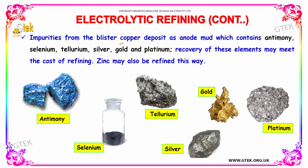Impurities from the blister copper deposit as anode mud, which contains antimony, selenium, tellurium, silver, gold, and platinum. Recovery of these elements may meet the cost of refining. Zinc can also be refined in this way.